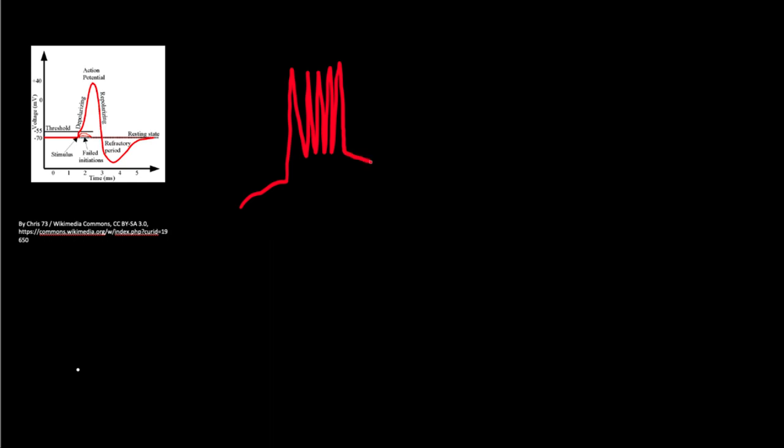But an epileptic neuron is somewhat different. In an epileptic neuron, when the voltage reaches the threshold potential, instead of a single action potential there is a burst of action potentials — hundreds of bursts — and then it goes into a hyperpolarization state and back to the resting membrane potential. This is called a paroxysmal depolarization shift.